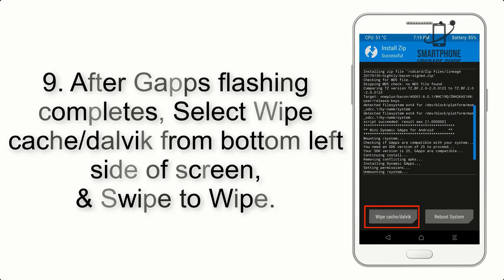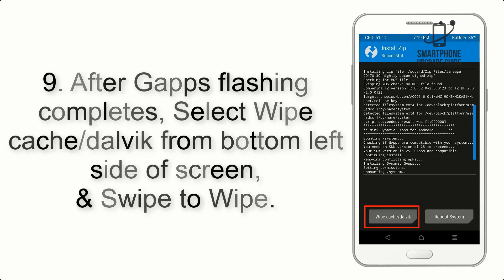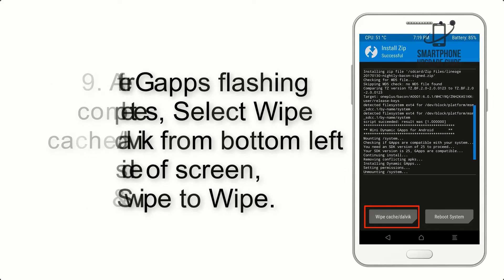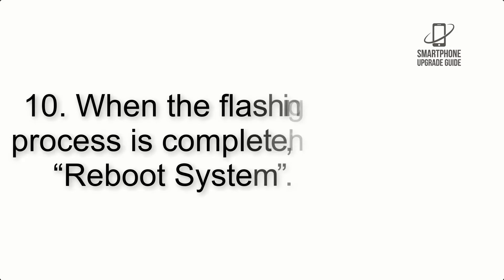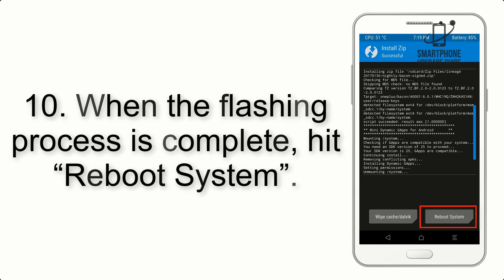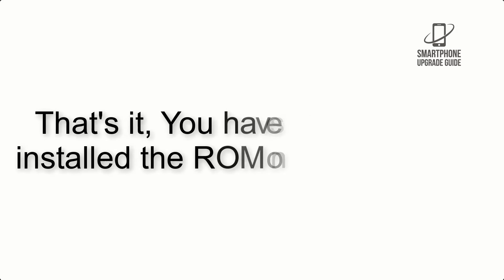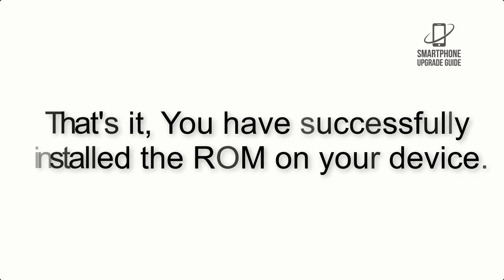Step 9: after GApps flashing completes, select Wipe Cache and Dalvik from the bottom left side of the screen and swipe to wipe. Step 10: when the flashing process is complete, hit Reboot System. That's it — you have successfully installed the ROM on your device.